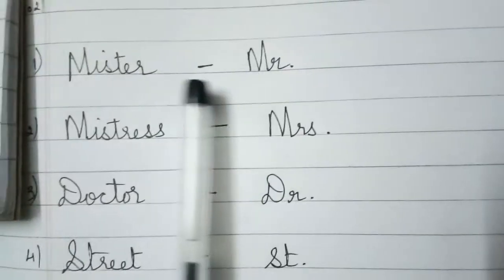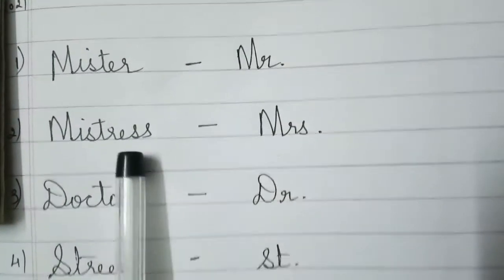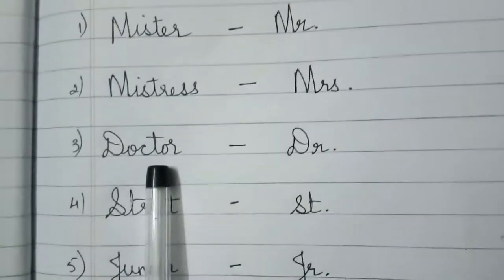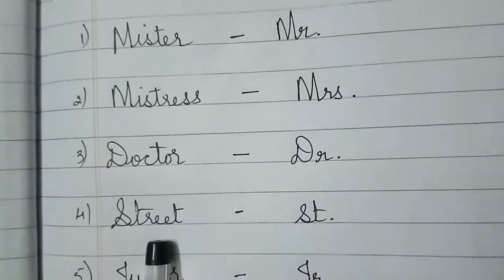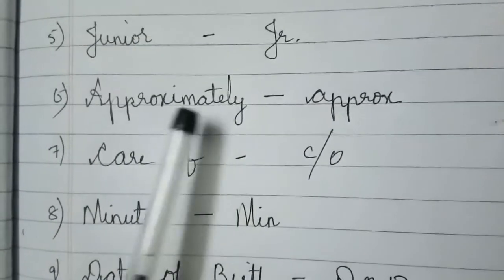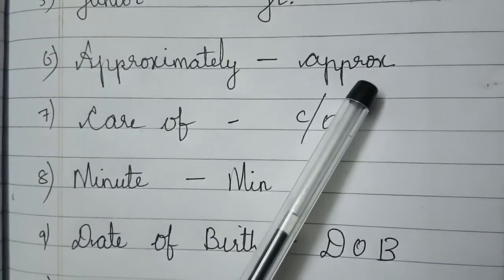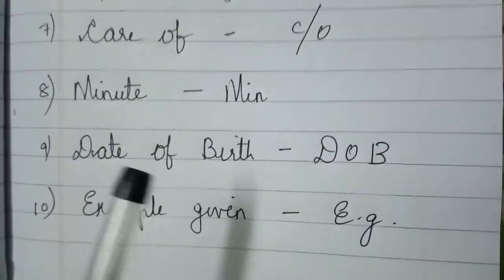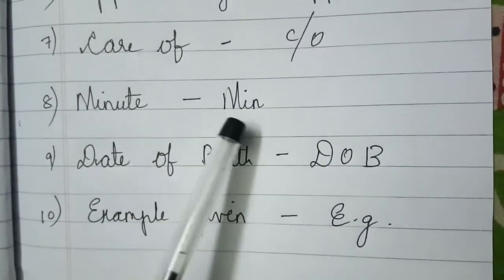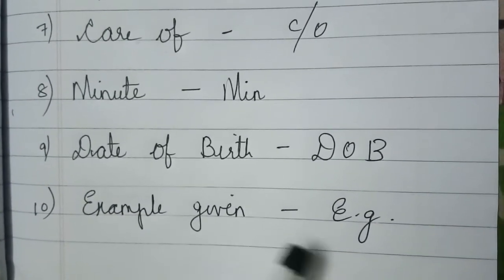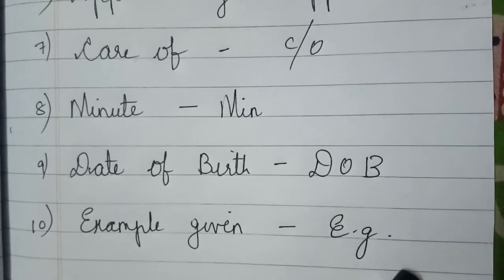Shall I read once? Mr., M-R dot. Mistress, M-R-S dot. Doctor, D-R dot. Street, S-T dot. Junior, J-R dot. Approximately, A-P-R-O-X. Seventh one, care of, C slash C-O. Minute, M-I-N. Date of birth, D-O-B. Example given, E dot G dot.